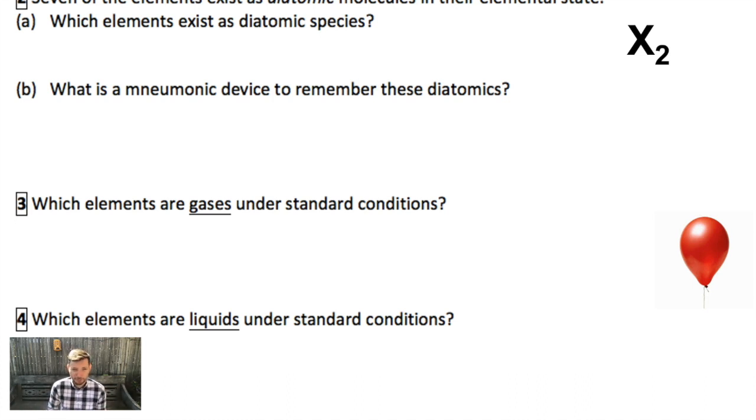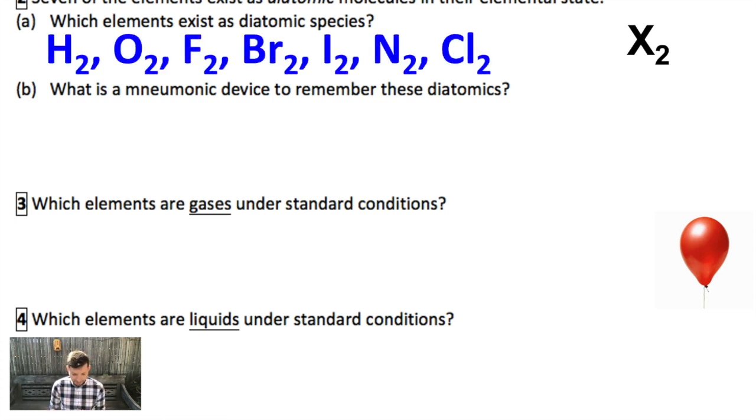So what are we going to do today? Well let's talk about some clusters of those elements. Seven of them exist as diatomic species in their elemental state and you should know which seven of these as a pure element exist as diatomic. So there's that symbol X2 to remind us that we really never find these particular elements in their monoatomic form. The diatomics are hydrogen, oxygen, fluorine, bromine, iodine, nitrogen, and chlorine.